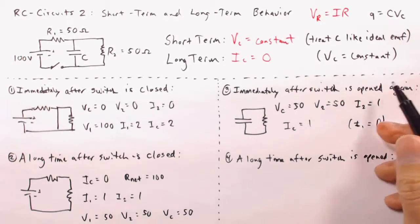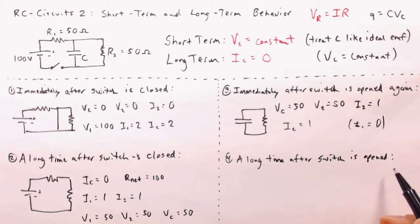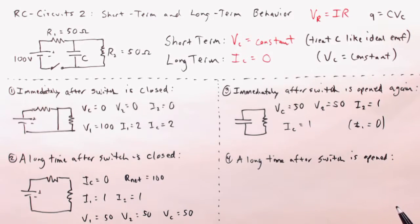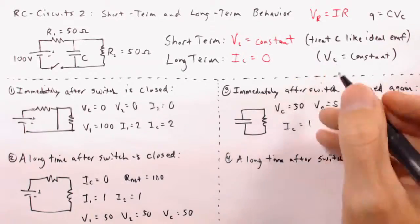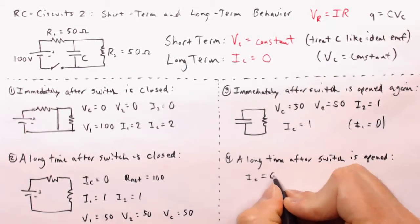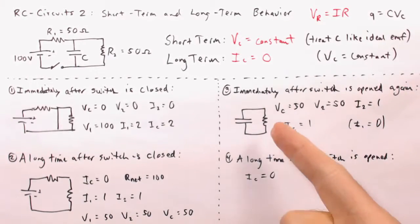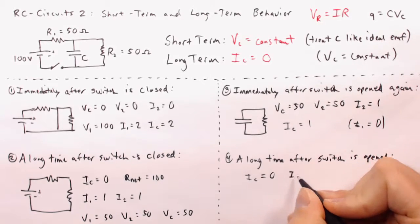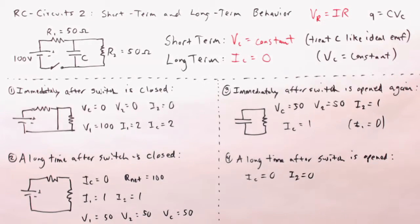So what happens a long time after the switch has been opened? Well, everything just kind of drains to zero. It's long-term behavior, so IC is going to equal zero, and resistor two is in series, so I2 will also be zero.